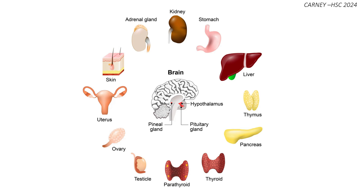Other major organs or glands that are important to know are the pancreas, which is involved in secreting insulin or glucagon to maintain blood sugar levels. The adrenal glands, which are located on the kidneys, are involved in secreting adrenaline, which activates our fight-or-flight response — our stress hormone.